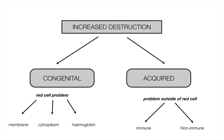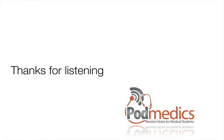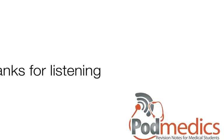In summary, the second half of this podcast covered anemias due to increased destruction. These can be broken down into congenital or inherited (intrinsic red cell problems with the membrane in spherocytosis and elliptocytosis, the cytoplasm in G6PD, and the haemoglobin in sickle cell disease and thalassemia) and acquired (problems arising outside the red cell, usually due to antibodies or mechanical damage). Thank you for listening and see you soon.